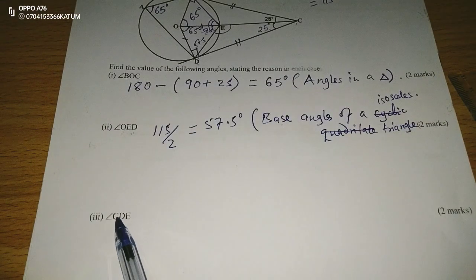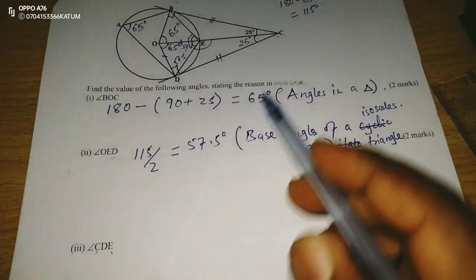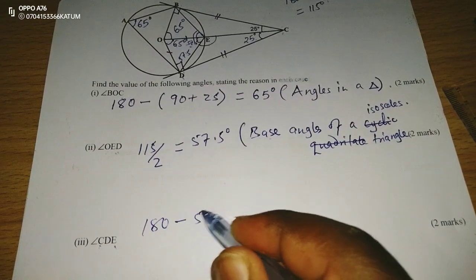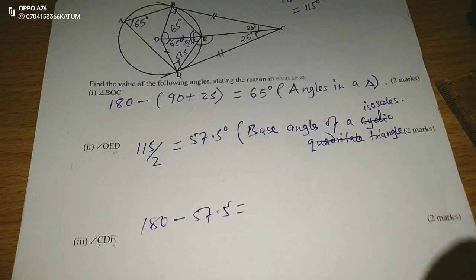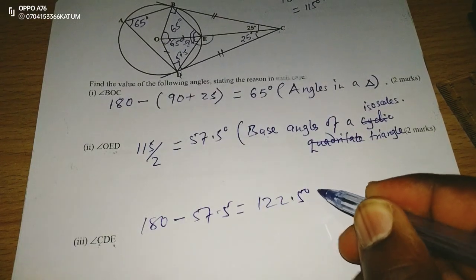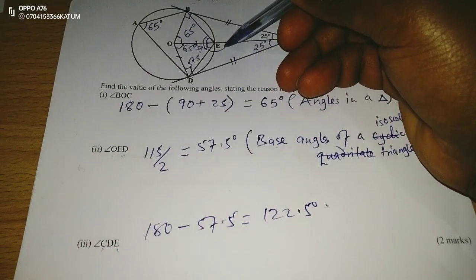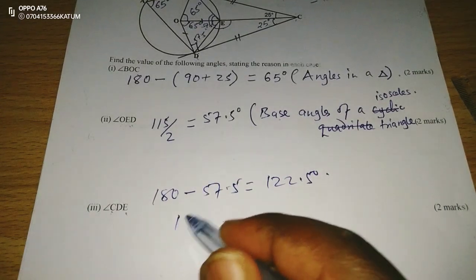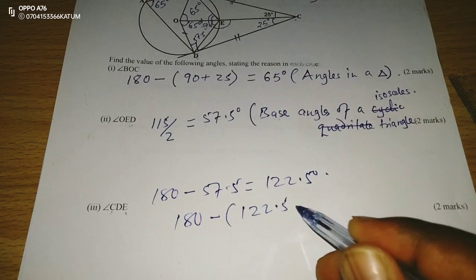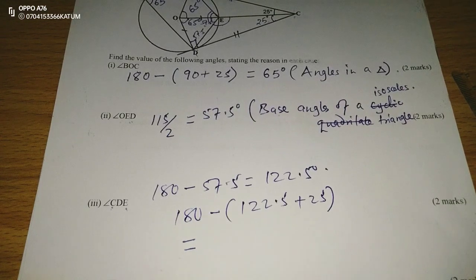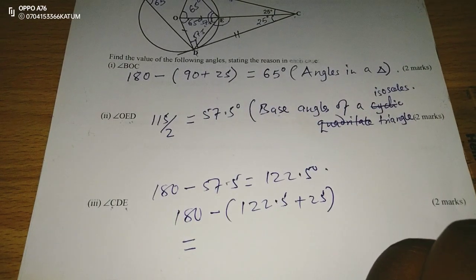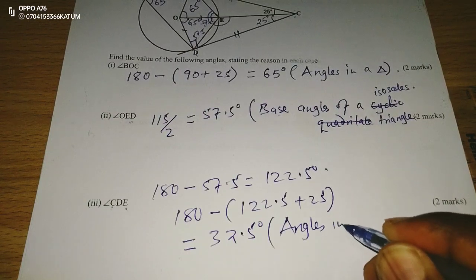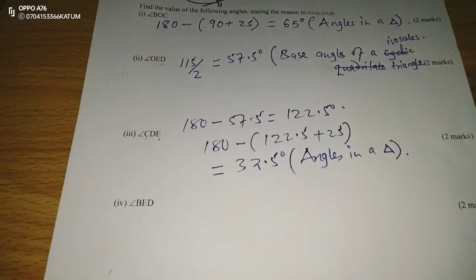The angle to be found also is CDE. We can find the angle at E first of all, whereby we need 180, we subtract 57.5 since it is a straight line. We get 122.5 degrees. So the angle at this point is 122.5 degrees, and we have 25 here. So considering triangle DEC, we can get the remaining angle, which is going to be 180 minus 122.5 and 25. That angle can be found as 32.5, angles in a triangle. So that is how we get the value of the missing angle.